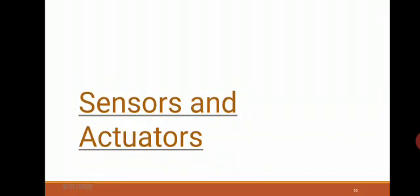A sensor is a device used to sense any changes in a physical parameter, and that corresponding sensed value is converted to a corresponding signal — maybe electrical or any other signal. That is called a transducer. An actuator is a controlling device — after sensing and processing data, if you want to control anything, that is done through the actuator. A relay is an example.